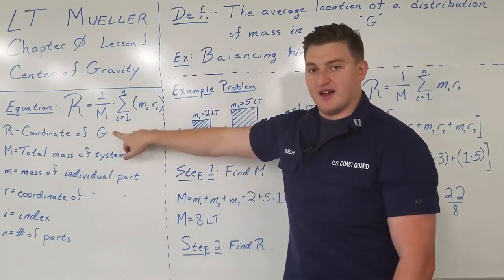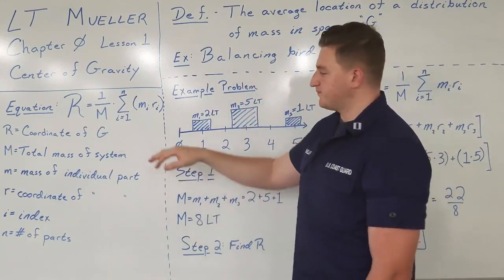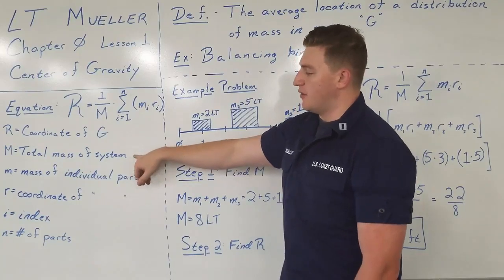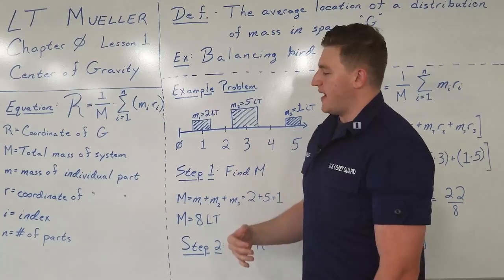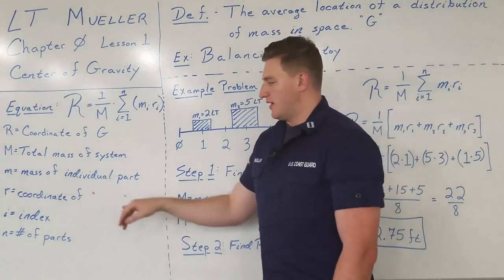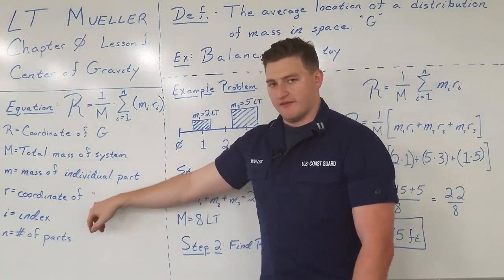So we'll see here capital R equals 1 over capital M times the summation from i equals 1 to n of lowercase m_i lowercase r_i. What does all this mean? Capital R is what we're trying to find. This is the coordinate of G. Capital M is the total mass of the system. Lowercase m is the mass of each individual part, as well as r is the coordinate of each individual part.